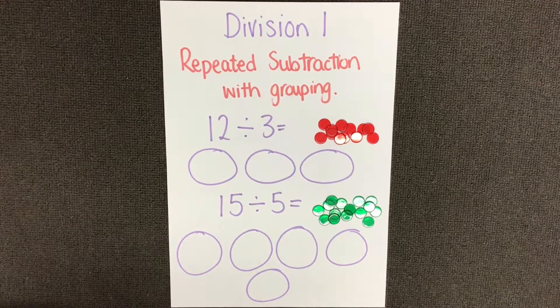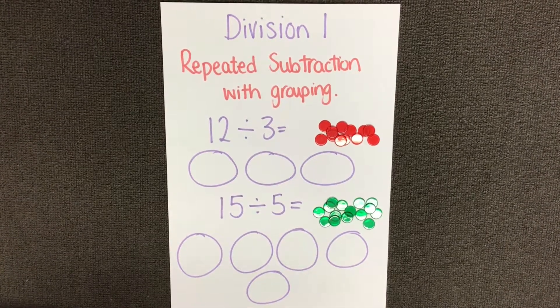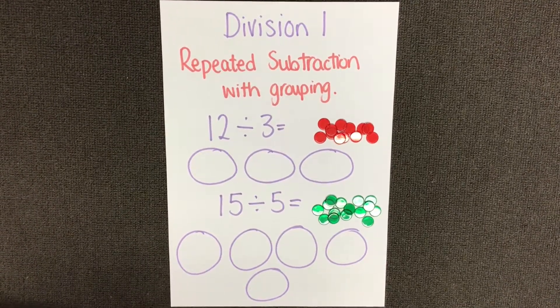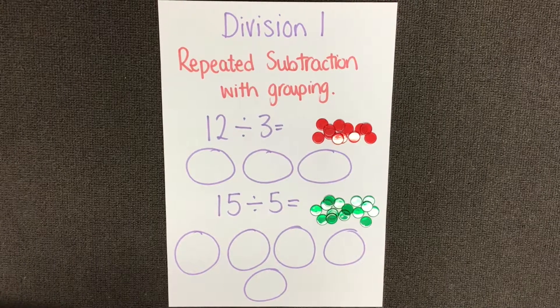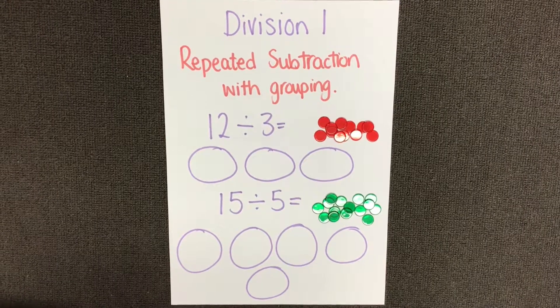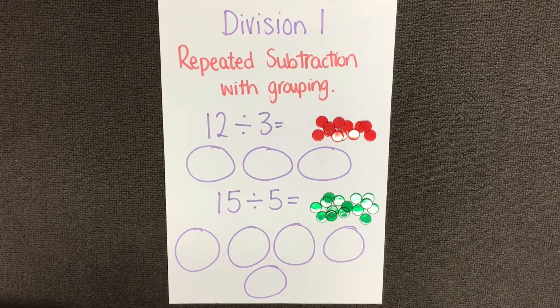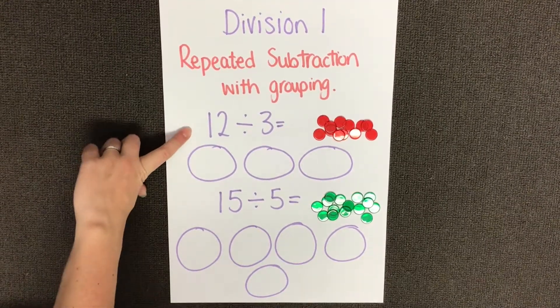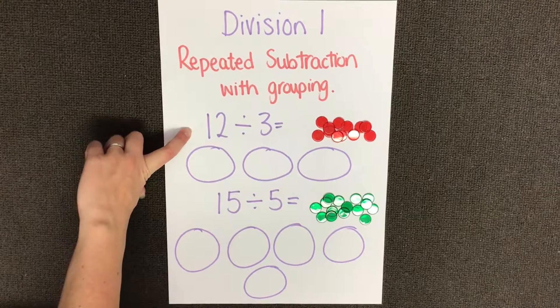Today we are learning about division. I'm going to teach you how to use a repeated subtraction with grouping strategy. Let's start by reading the first question: 12 divided by 3 equals.